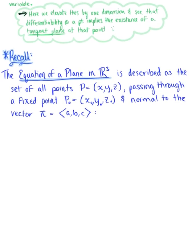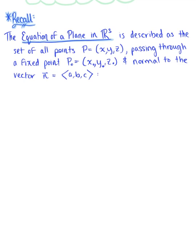I want to begin by reminding us that we already know how to find the equation of a plane. The equation of a plane in space, or in R3, is described as the set of all arbitrary points P passing through a fixed point P0, and normal to a vector N. We derived the equation of the plane in three dimensions using the dot product of the position vector — defined as the vector from point P0 to point P — dotted with the vector normal to the plane.